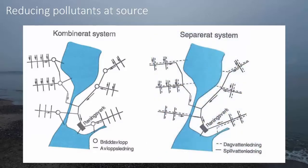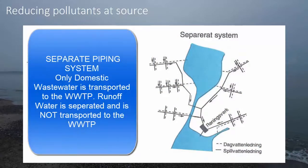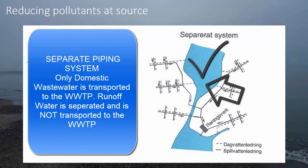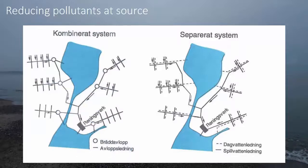Then we have something called a separate system — two separate piping systems. One for domestic wastewater or household water, and one separate piping system for the runoff water. This is important because in a separated system, the runoff water goes away from the wastewater treatment plant, out back into the sea, lakes, or creeks. This means a separated system puts a lot less hydraulic load on the wastewater treatment plant compared to a combined system.